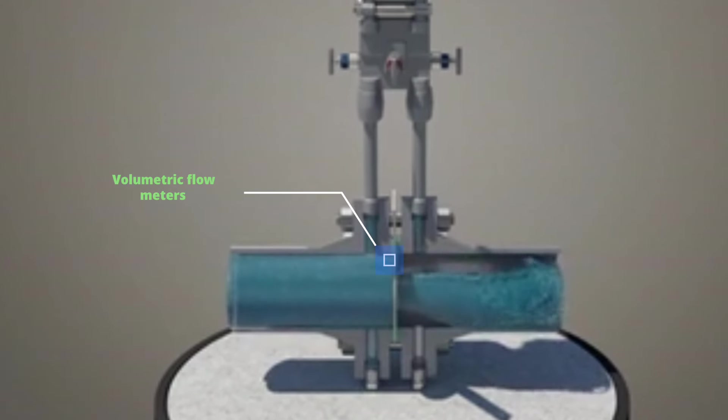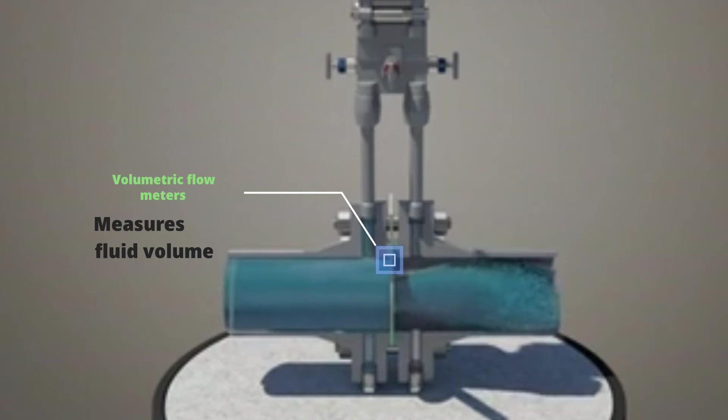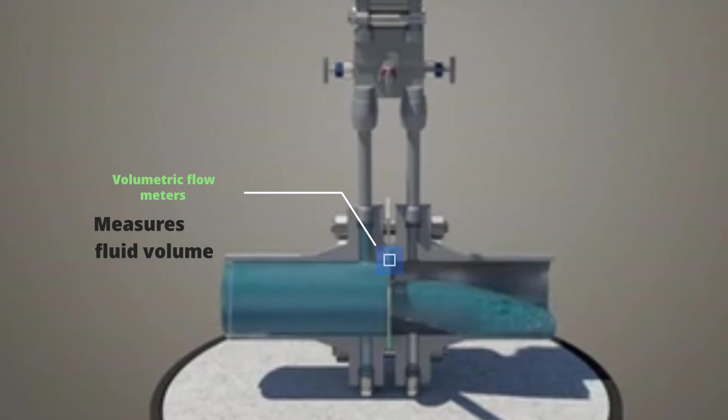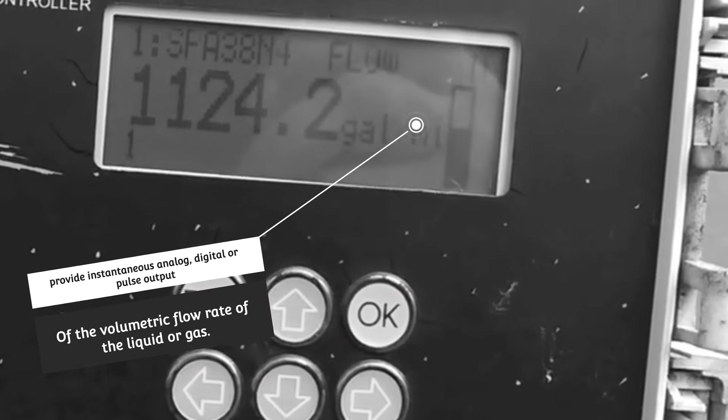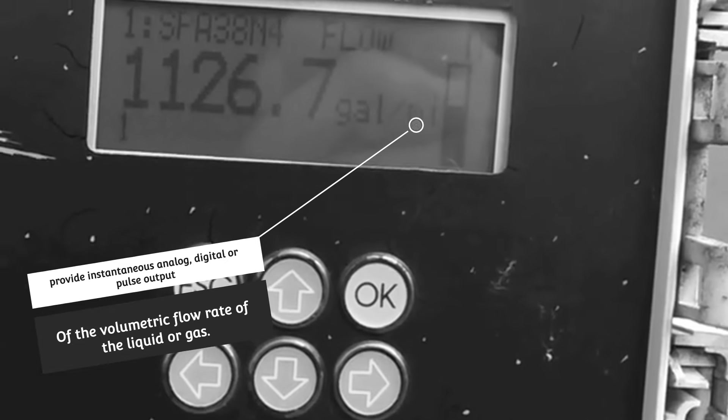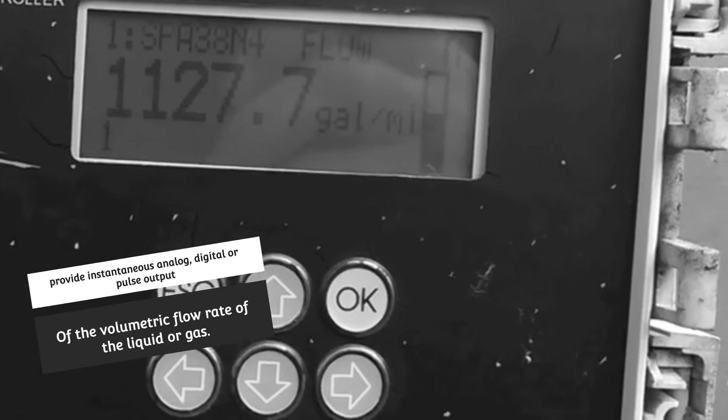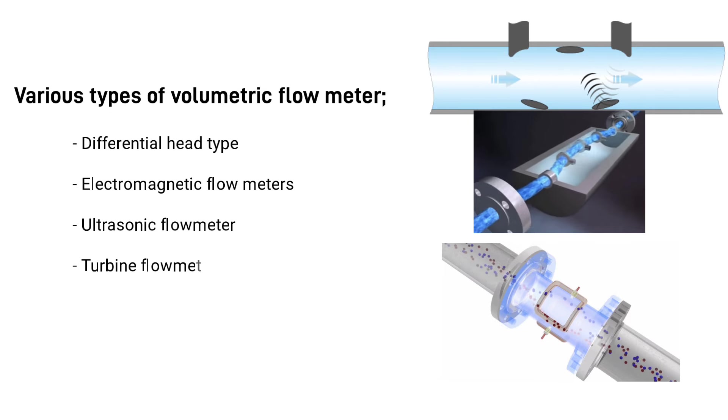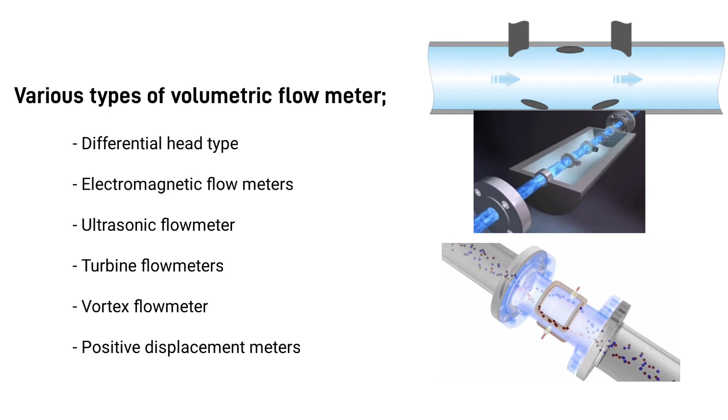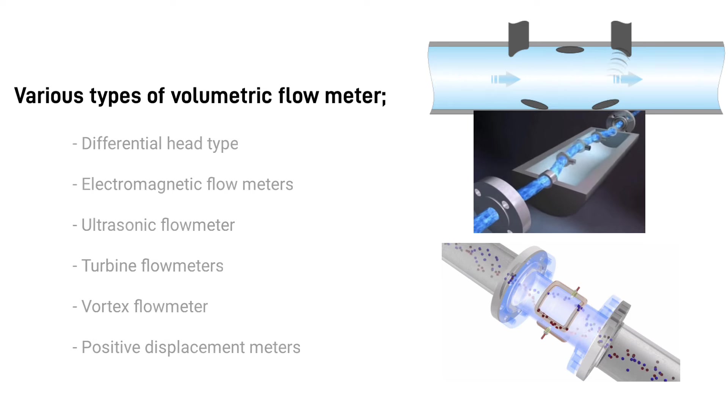Volumetric flow meters got their name because these flow meters measure the fluid volume passing through a specific location in a set period of time. They provide instantaneous analog, digital, or pulse output of the volumetric flow rate of the liquid or gas. Various types of volumetric flow meters are available: differential head type, electromagnetic flow meters, ultrasonic flow meters, turbine flow meters, vortex flow meters, and positive displacement meters.